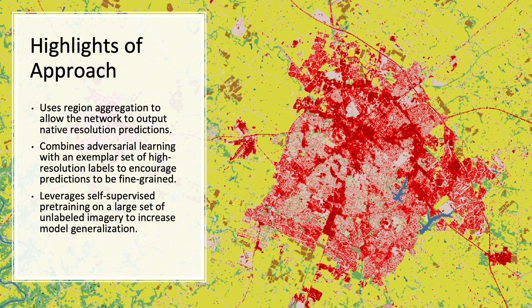Instead, we explore how to generate fine-grained predictions from low-resolution supervision without upsampling, by taking advantage of an exemplar set of high-resolution labels that has no spatial correspondence to the input imagery. Extensive experiments showed that our approach significantly reduces the performance gap compared to a high-resolution baseline without the need of high-resolution supervision.